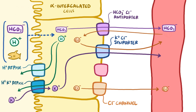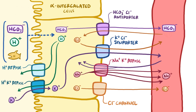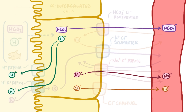Finally, it's worth mentioning that, just like all cells, sodium and potassium levels are controlled by the sodium-potassium ATPase pumps, which are on the basolateral surface and move two potassium ions into the cell and three sodium ions out of the cell. So overall, there's a net movement of sodium, chloride, and bicarbonate into the blood, while hydrogen is pushed into the tubule.